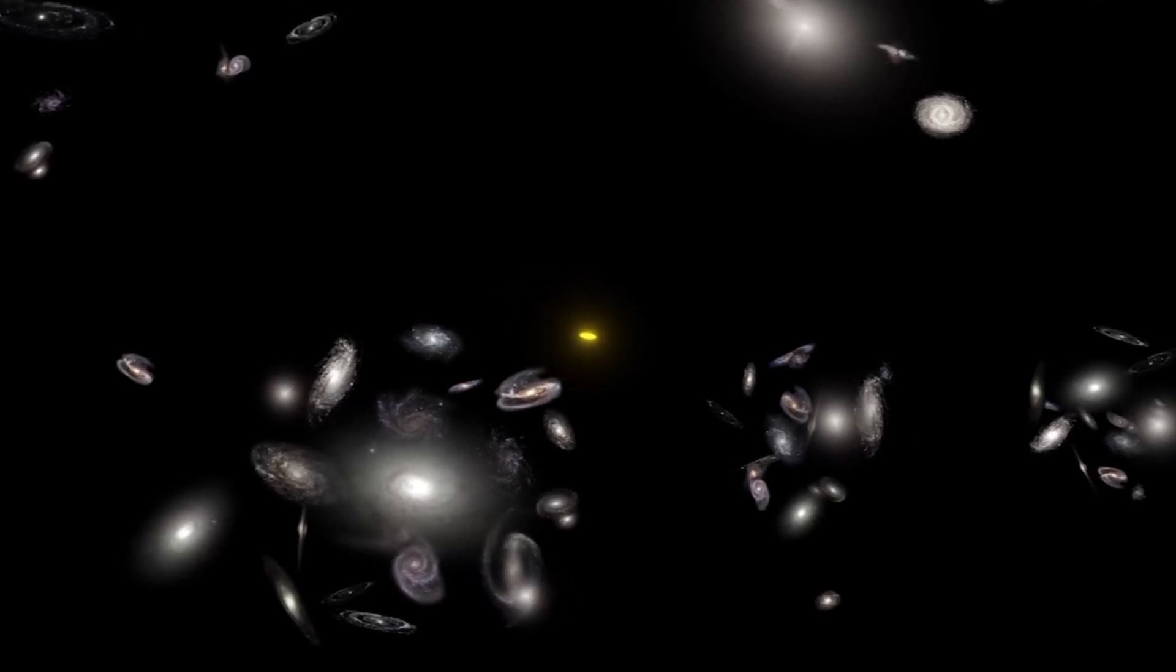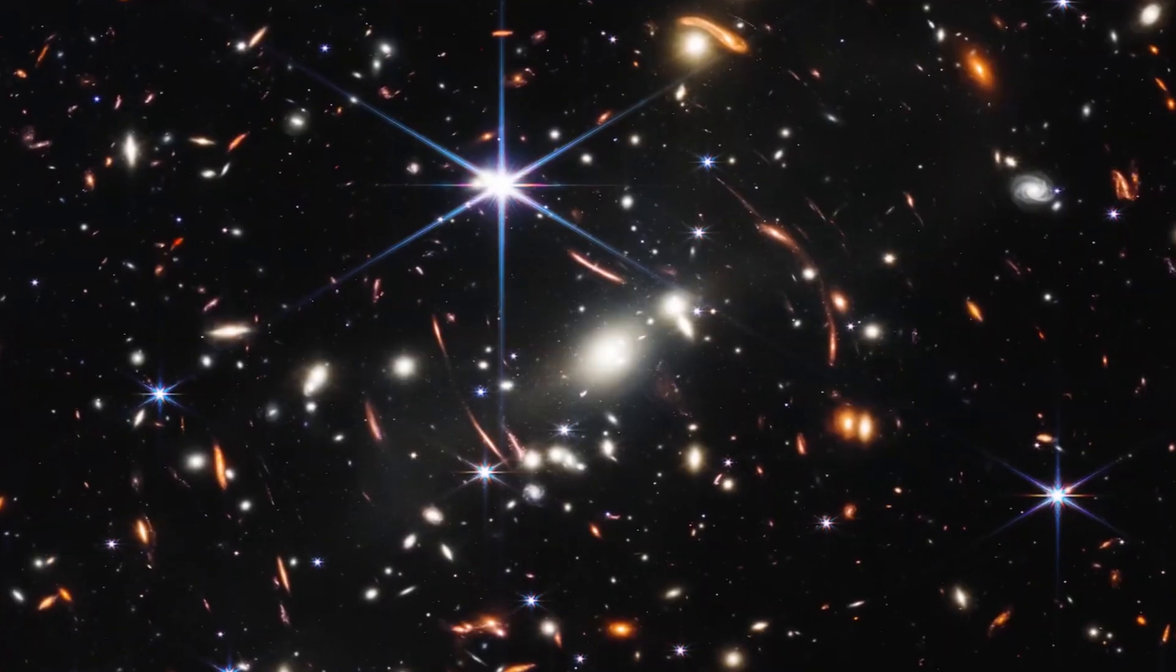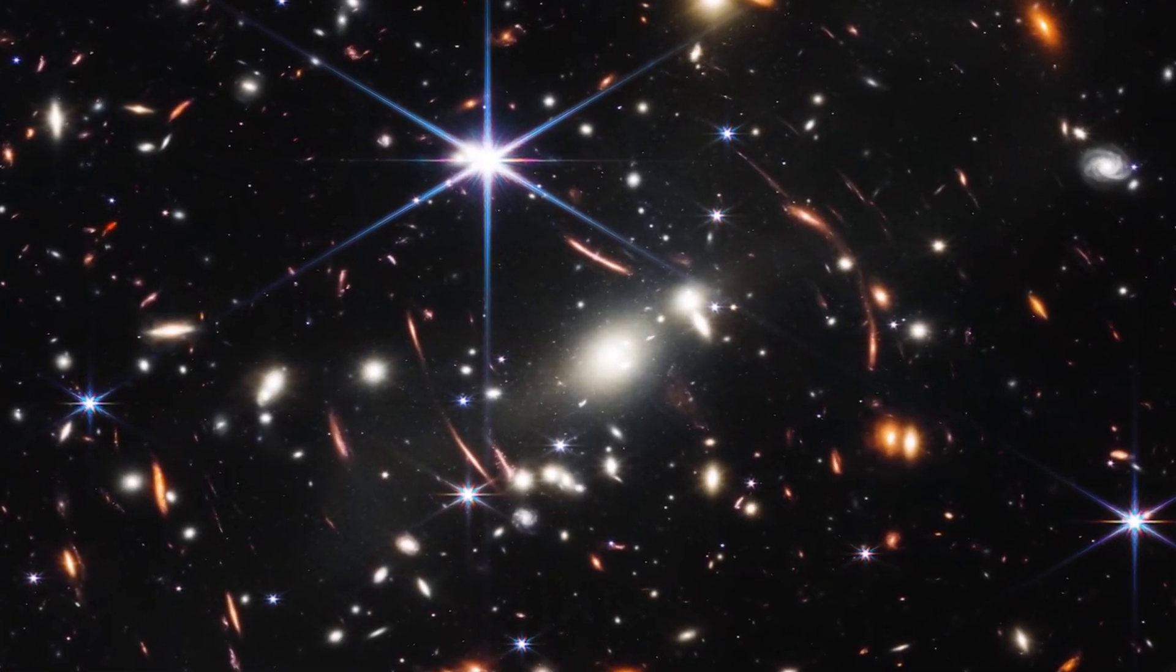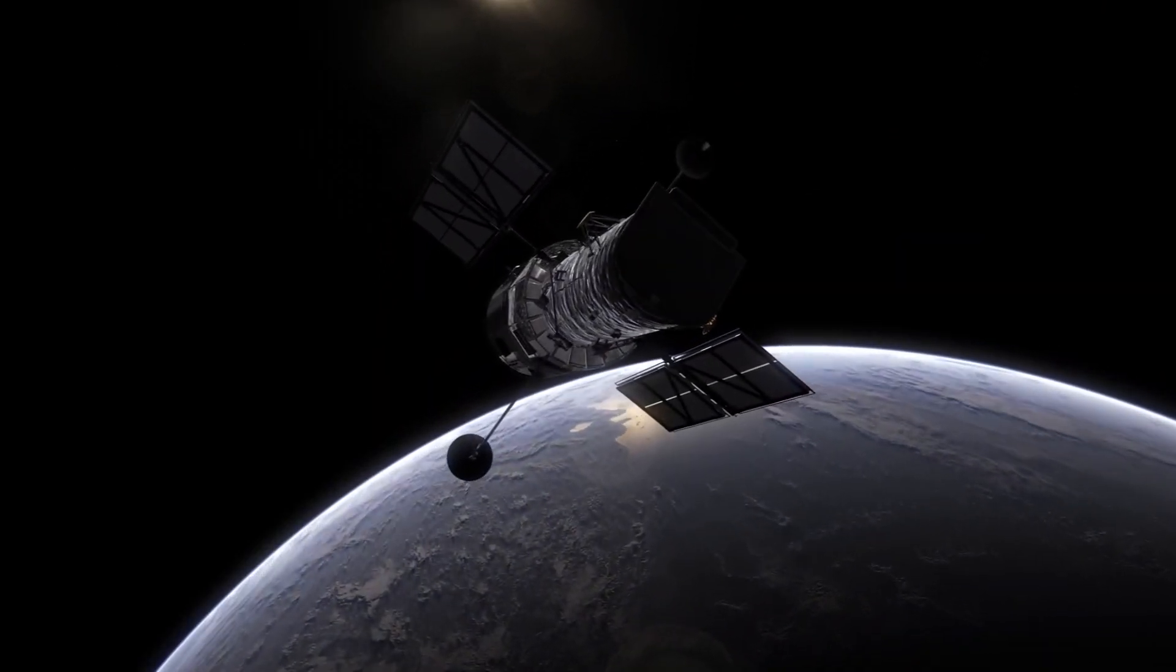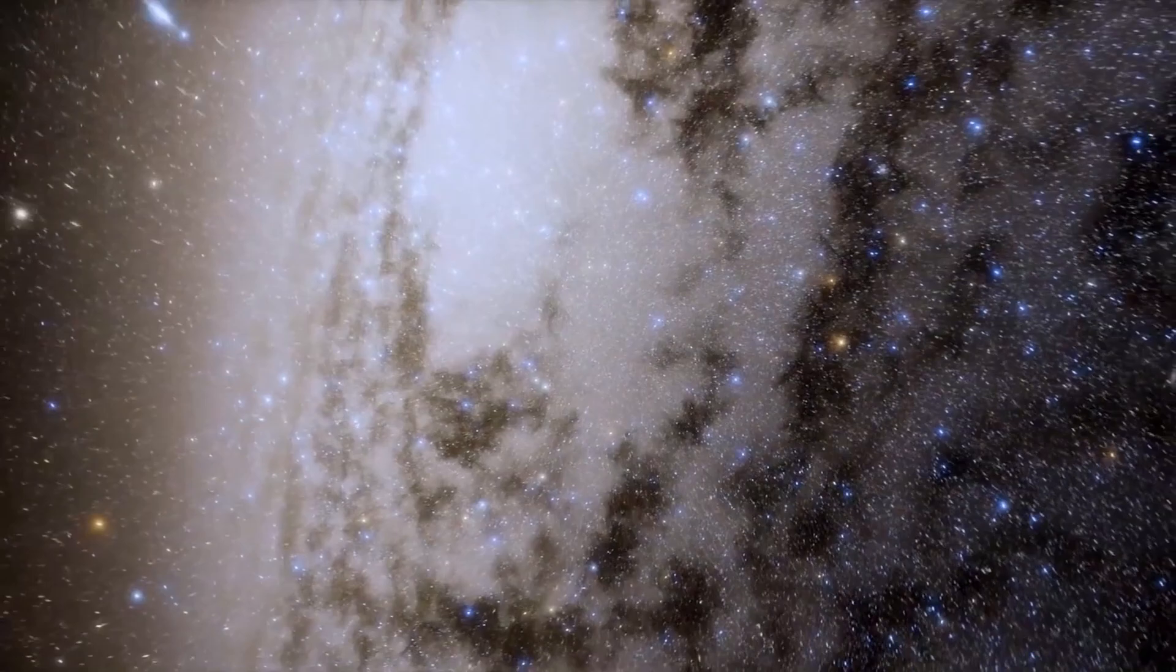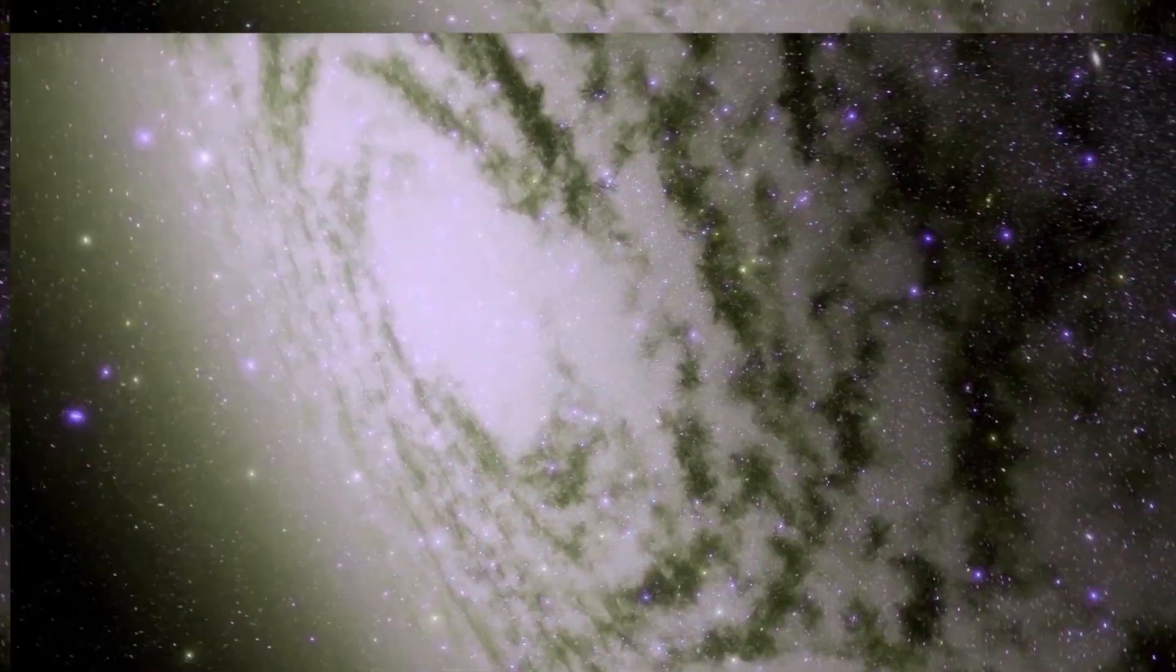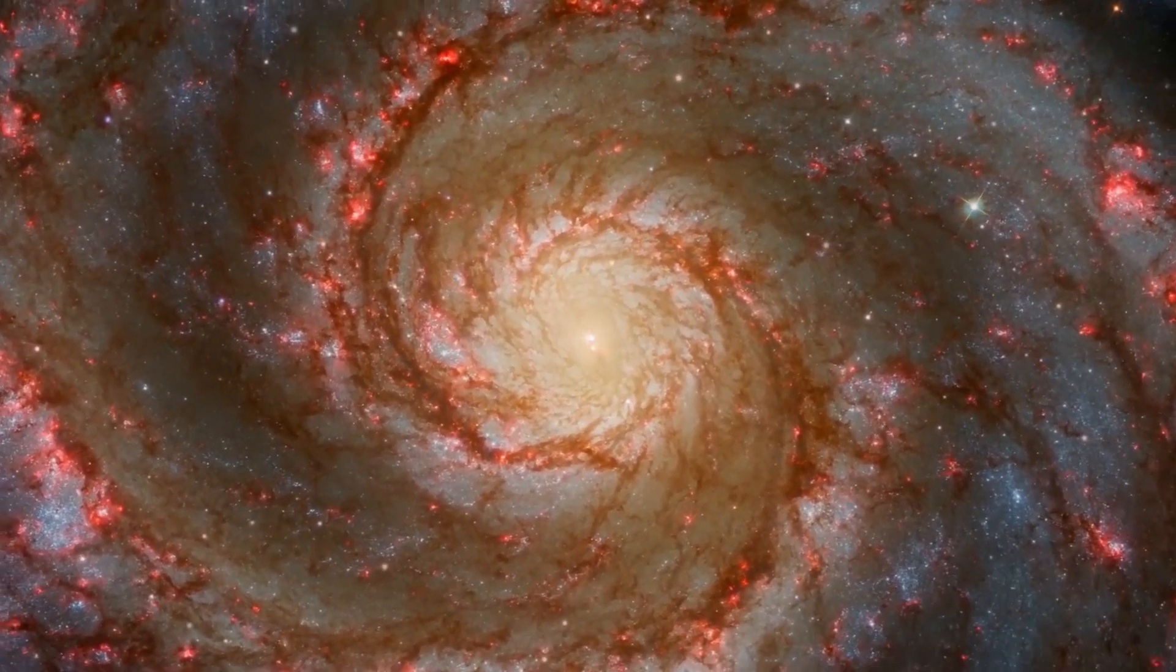The fact that the observed galaxies are two to three times smaller than similar galaxies imaged by the Hubble Space Telescope completely defies the expected behavior in an expanding universe. According to the hypothesis, as the universe expands, objects should appear larger as distance increases. However, these James Webb observations show galaxies that defy that expectation.